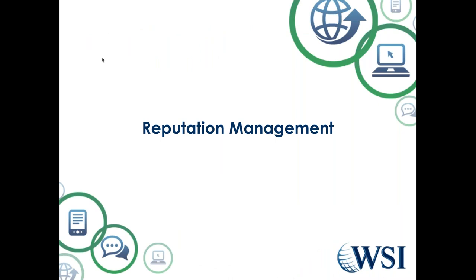So that's two things they could do almost immediately that are fairly easy to set up: implement an SSL certificate to display the padlock, and add a phone number to the top right-hand corner of the desktop version of their site. They're already starting to nail down critical trust factors and differentiate from Montessori Academy of Chicago.